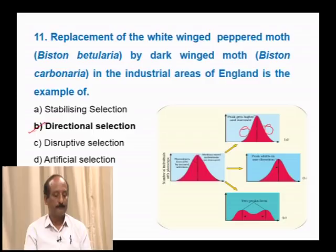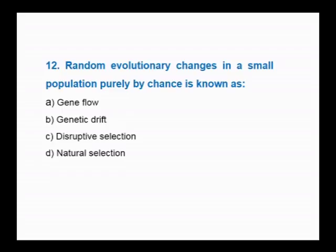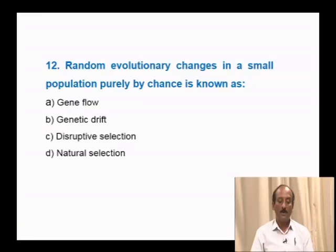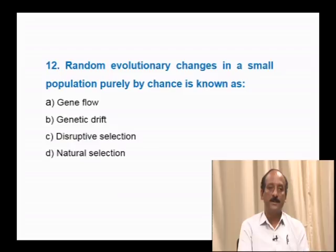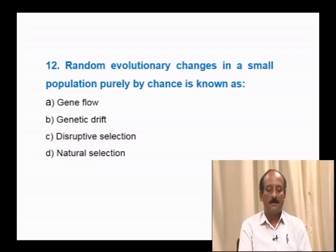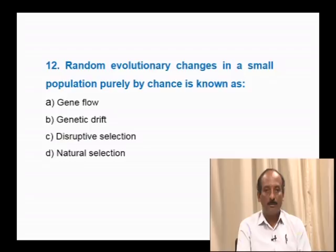Question number 12: Random evolutionary changes in a small population purely by chance is known as — gene flow, genetic drift, disruptive selection, natural selection. The change in gene frequency purely by chance is called genetic drift. It leads to alteration in gene frequency resulting in formation of new individuals, and is one of the factors affecting the Hardy-Weinberg principle. The correct answer is genetic drift.